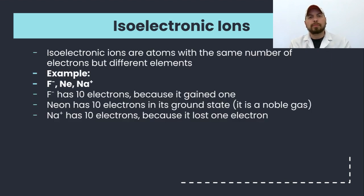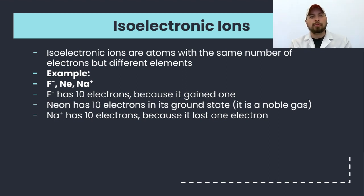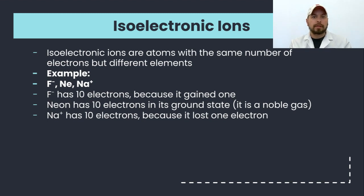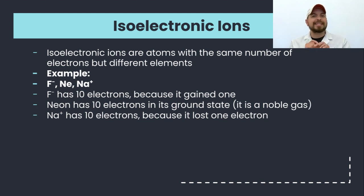Isoelectric means that two atoms or ions have the same number of electrons. For example, if I look at fluorine in its ionic form F⁻, neon with no charge, and sodium in its plus one form — all three of them have the exact same number of electrons: ten electrons each. They are therefore isoelectric to each other.